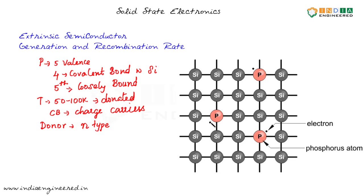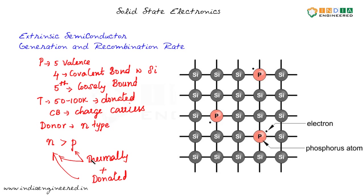It is called N-type because the number of electrons in the conduction band will be greater than the number of holes. Holes are generated thermally as electron-hole pairs, but these phosphorus atoms also donate additional electrons. So holes are generated only thermally, while electrons are generated both thermally and by donation from phosphorus atoms. Since the majority charge carriers are electrons — negatively charged particles — we call it an N-type semiconductor.